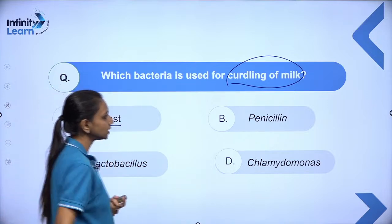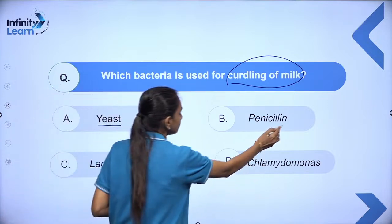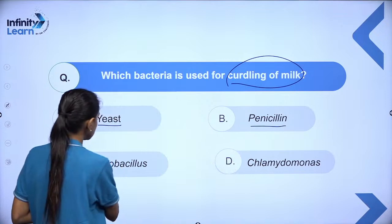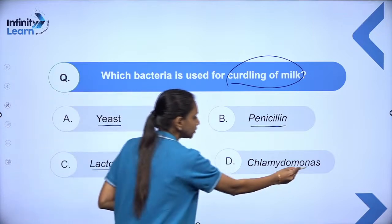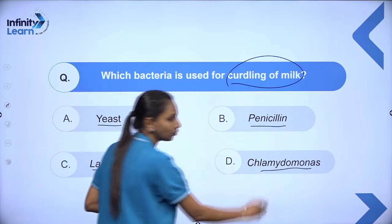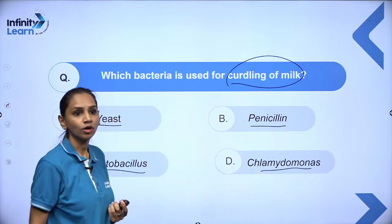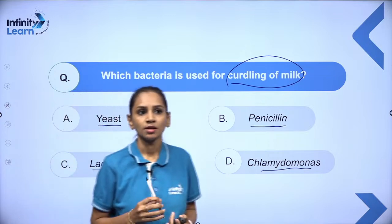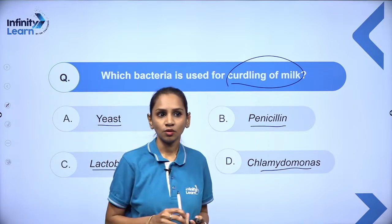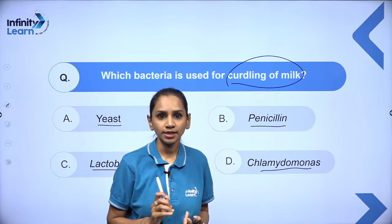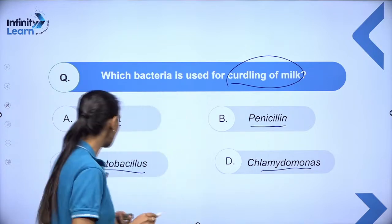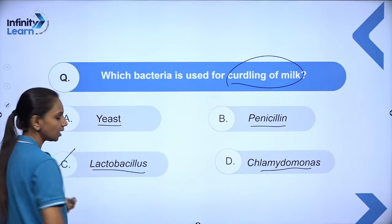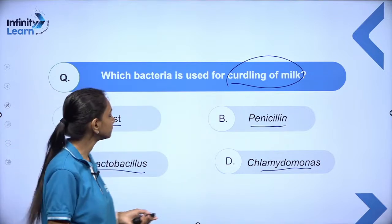Which bacteria is used for curdling of milk? Option A: yeast. Option B: penicillin. Option C: Lactobacillus. Option D: chlamydomonas. The correct answer is option C — Lactobacillus.